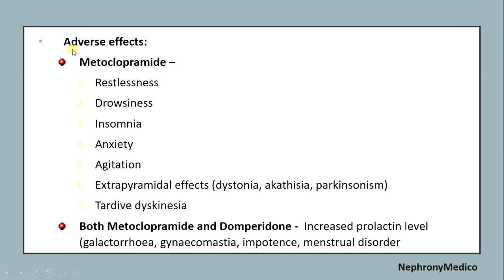Adverse effects of metoclopramide include restlessness, drowsiness, insomnia, anxiety, agitation, and extrapyramidal effects like dystonia, akathisia, parkinsonism, and tardive dyskinesia. Both metoclopramide and domperidone cause increased prolactin levels leading to galactorrhea, gynecomastia, impotence, and menstrual disorders.